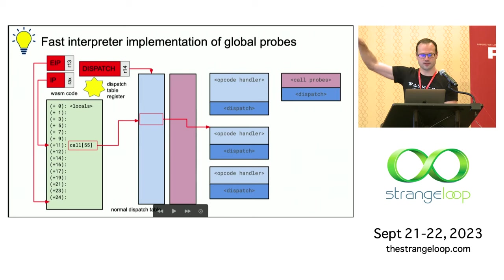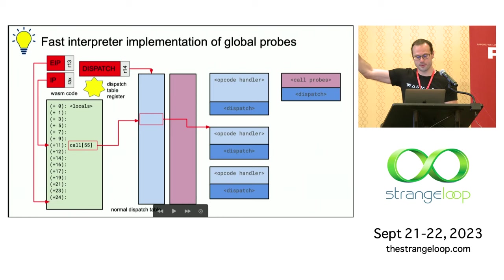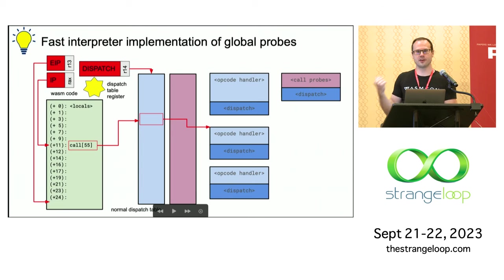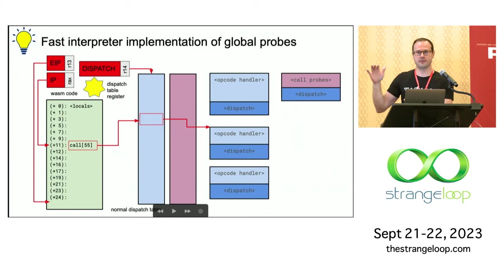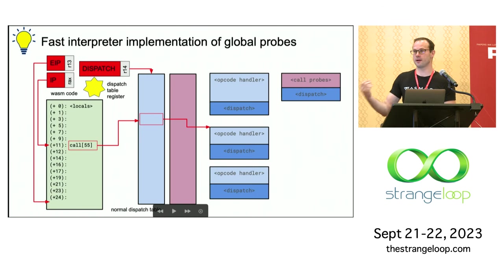This is the interpreter's state. There's an IP — the instruction pointer — where the interpreter keeps track of the current executing bytecode. There's a pointer to the end of the code, and also a table that tells the interpreter what to do for every kind of bytecode — that's called a dispatch table. The key idea is that the dispatch table is not a fixed thing; instead there's a register that points to it. Normally it points to the blue dispatch table — the actual machine code for what to do for every different kind of opcode. If you have a global probe where you want to call back for every single bytecode, we just swap the register.